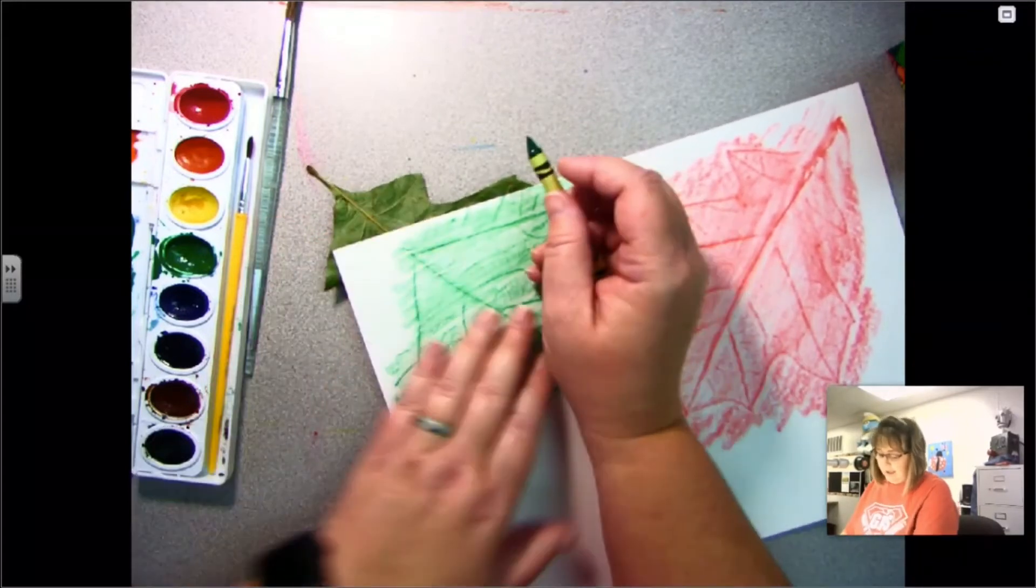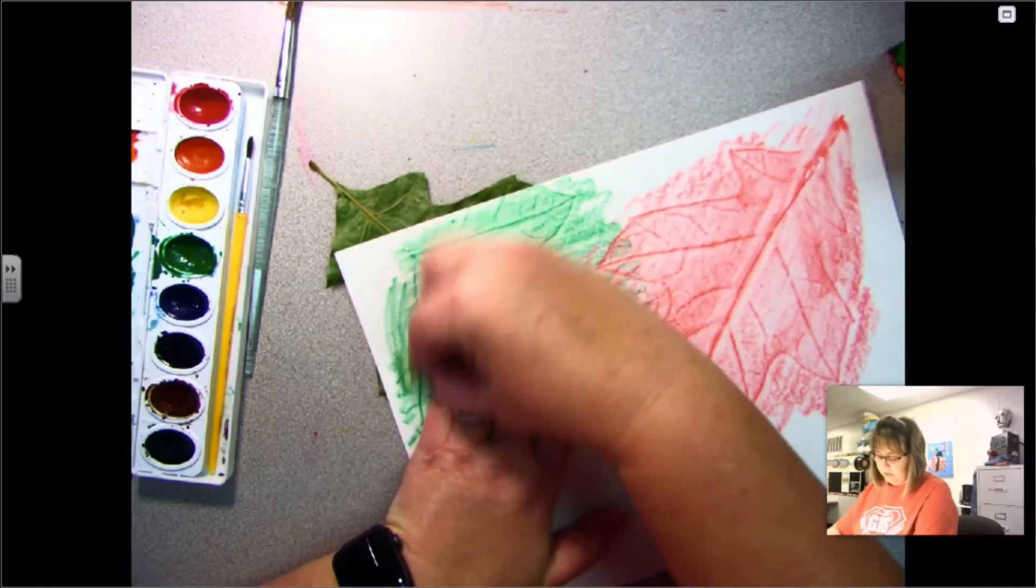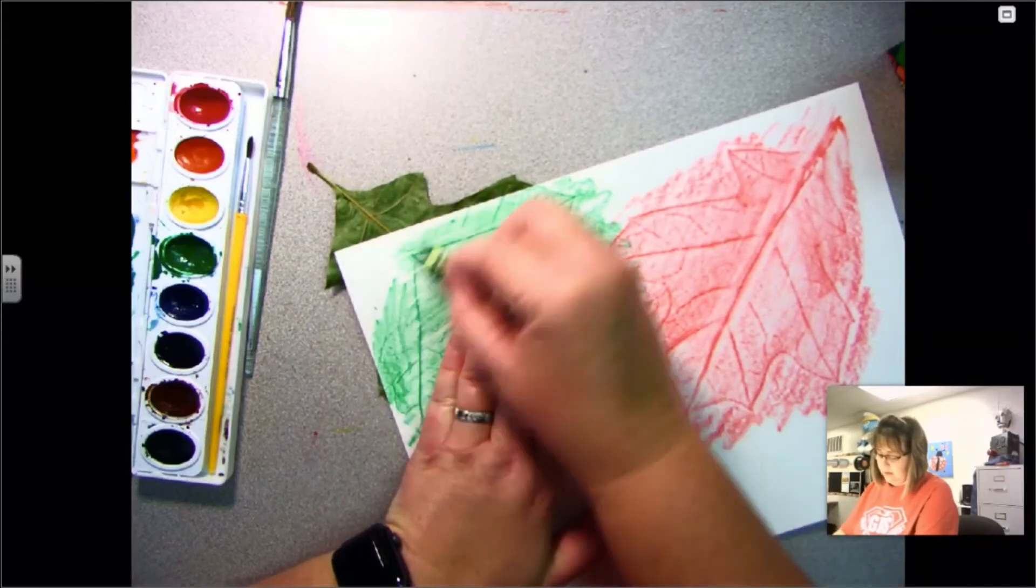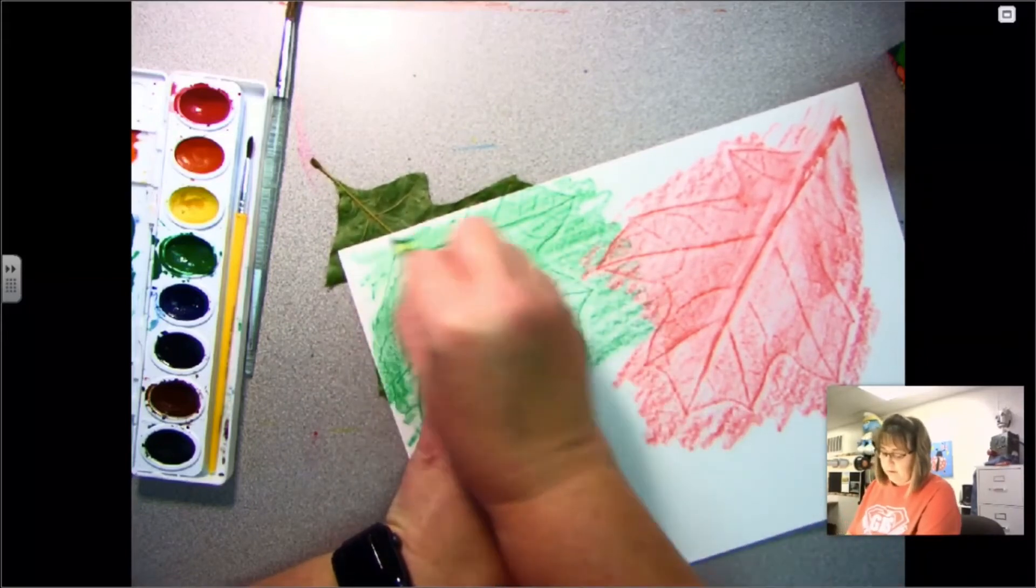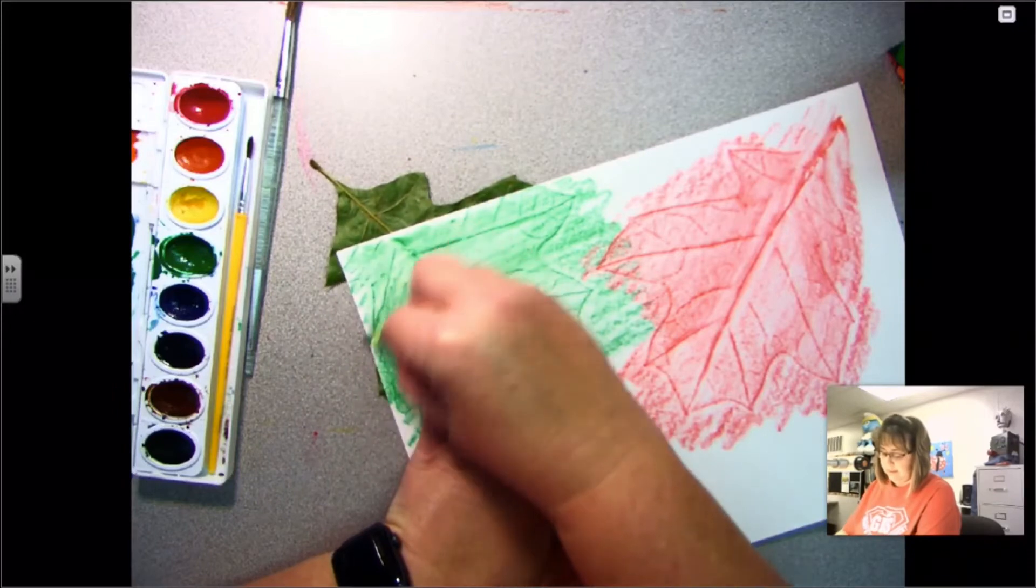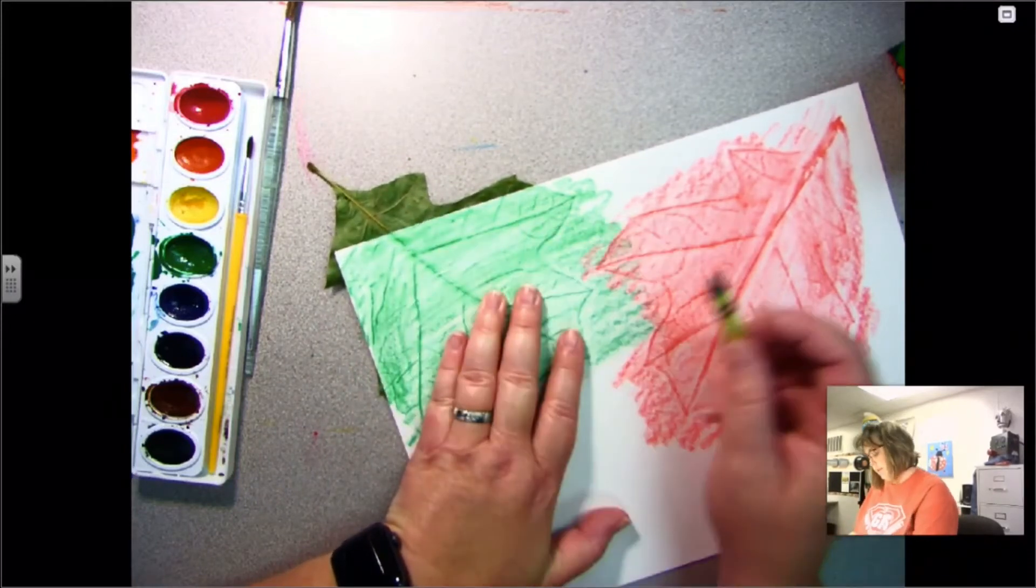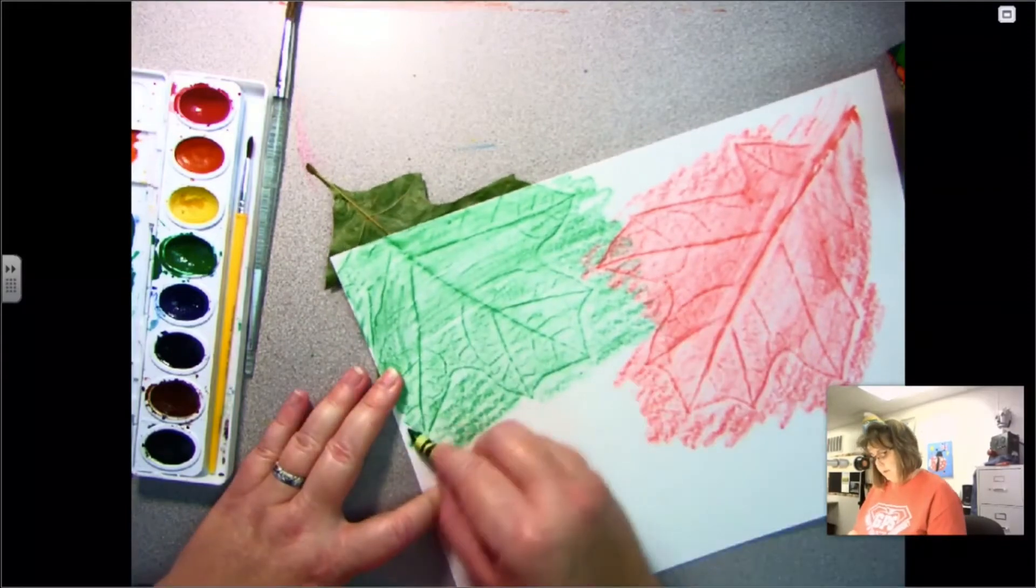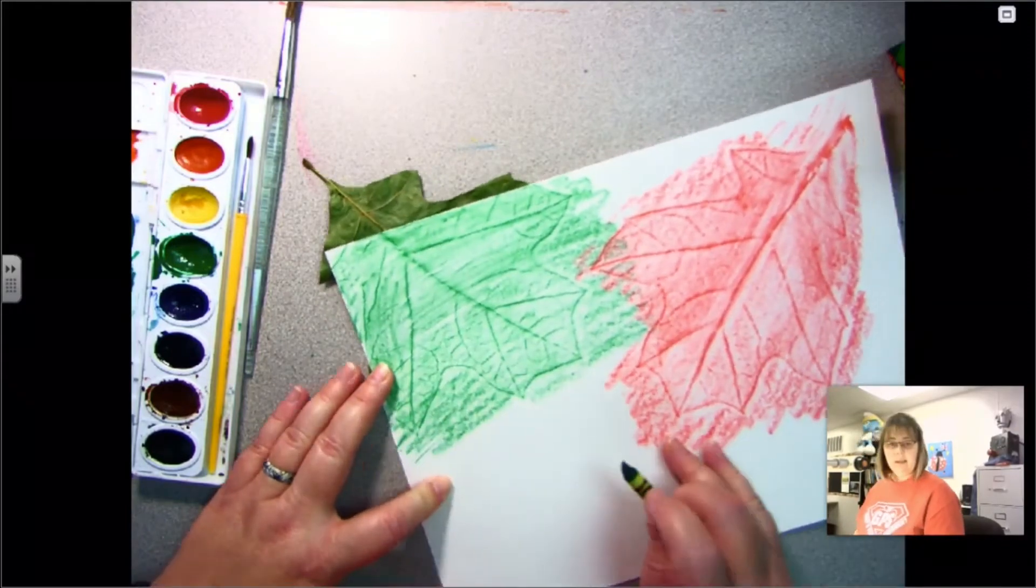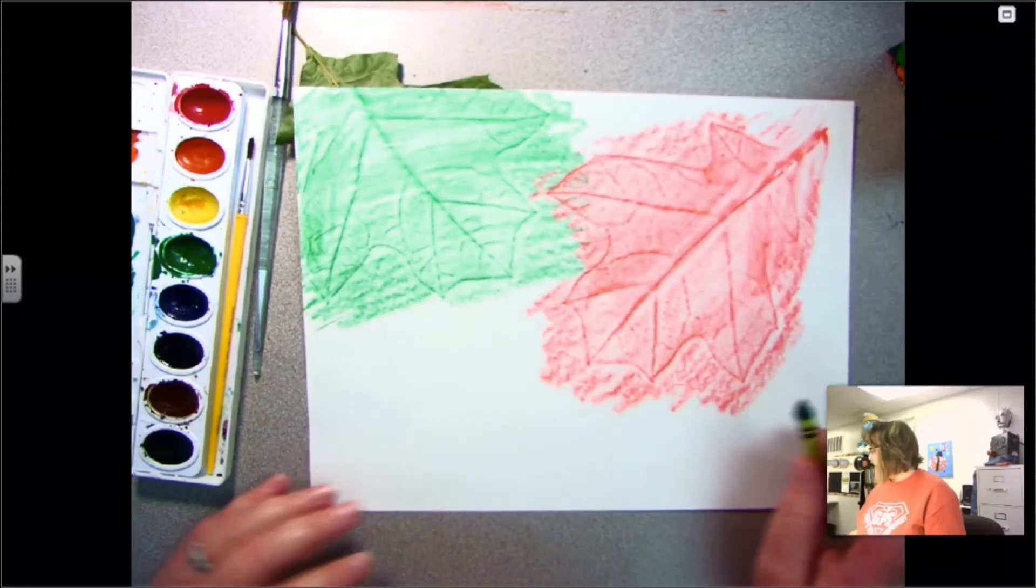You can overlap your colors, you can overlap your leaves. Try different things, see what works, look what looks the best. And then only upload one picture to Artsonia that is your favorite one of your pieces that you like the most. Only upload one to Artsonia for this project.